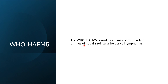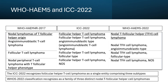This is the comparison between the 2017 WHO, ICC 2022, and WHO fifth edition. The ICC considers this as one disease with three subtypes, while WHO considers it as a family of three entities.